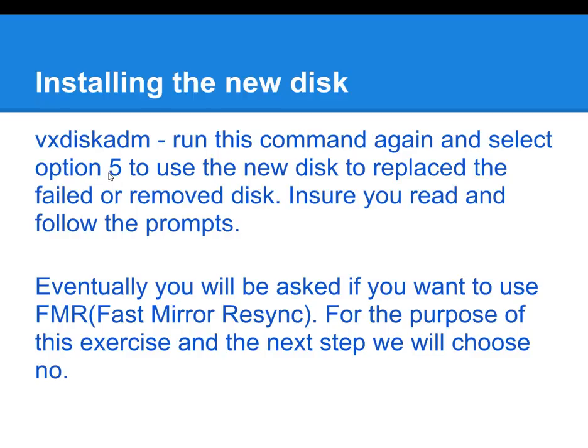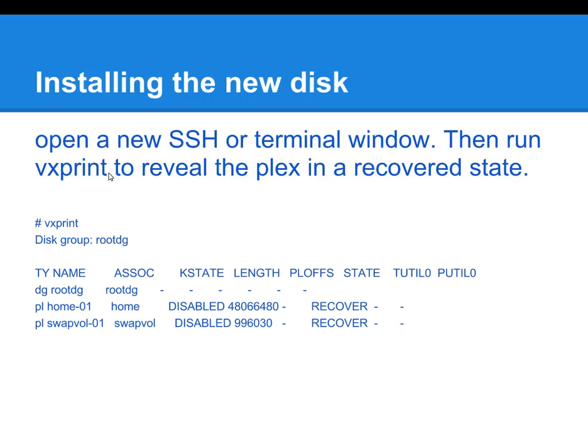At this point, you really just want to follow all the prompts. Eventually you're going to be asked if you want to use FMR, which is Fast Mirror Resync. For the purpose of this tutorial, you want to say no. You can also open up another SSH window so you can get a little bit more detailed information while the syncing of the root mirror is taking place.